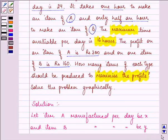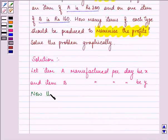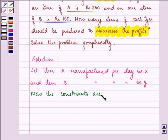Now the constraints are, first of all, it is given to us that the total number of items which we can make in a day is 24. That means x plus y can be less than or equal to 24. It has to be that x and y have to be greater than 0.